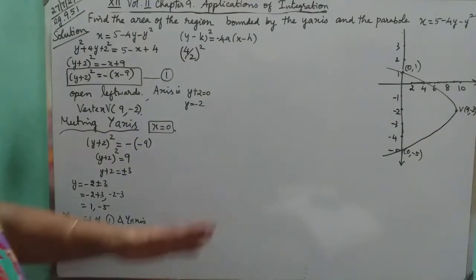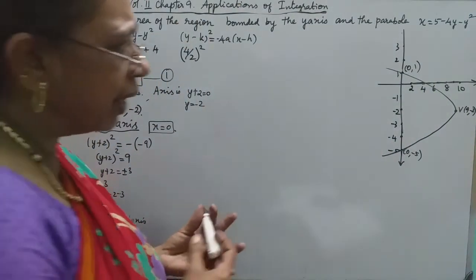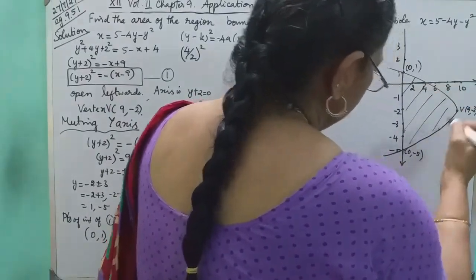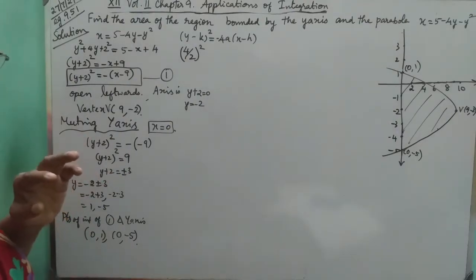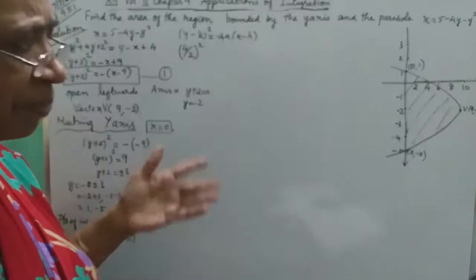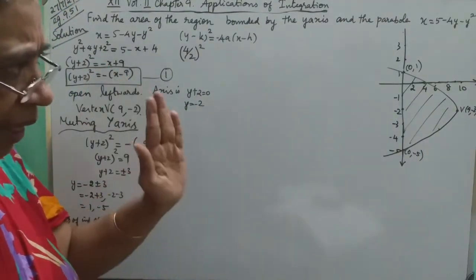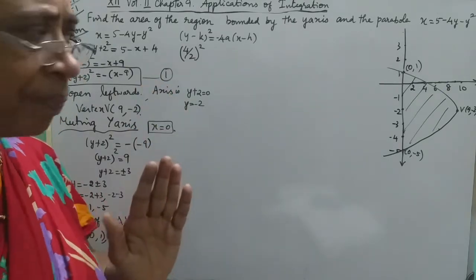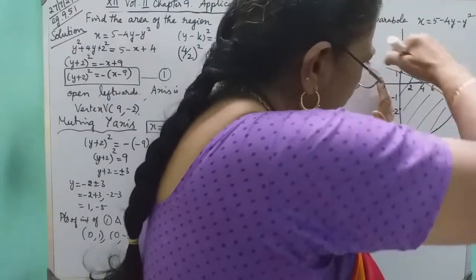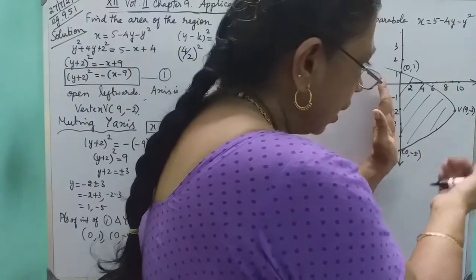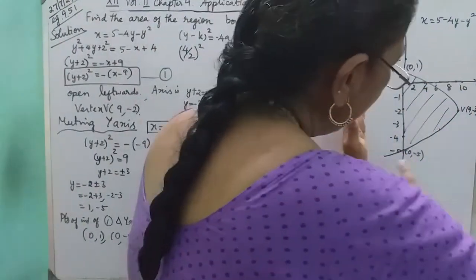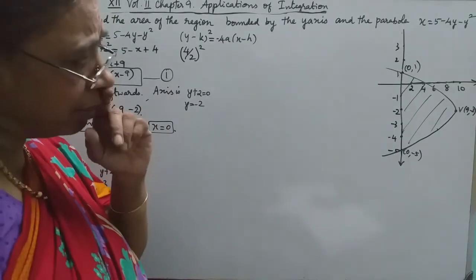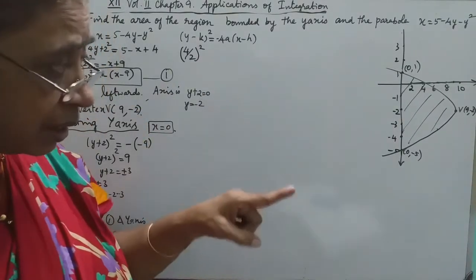Now the parabola opens leftward and this is the y-axis. The area is the region bounded between the parabola and the y-axis. How are we going to find this area? We will use horizontal strips — the strips are parallel to the x-axis.